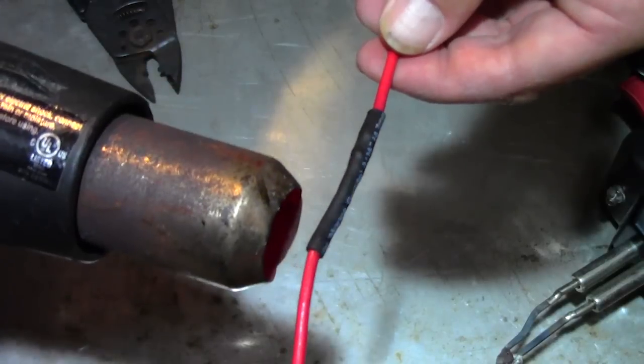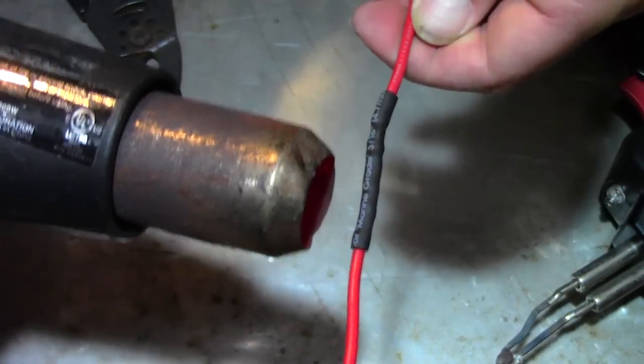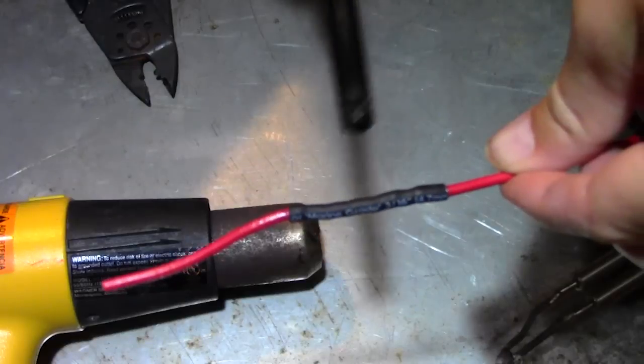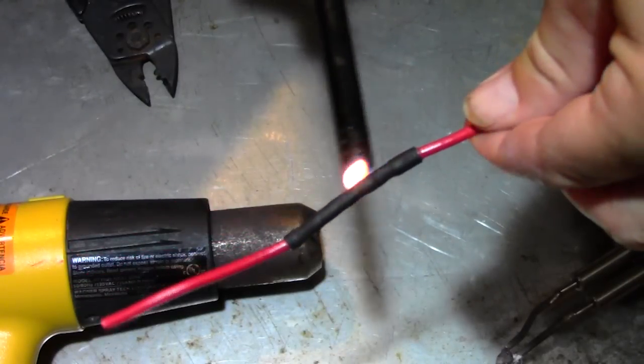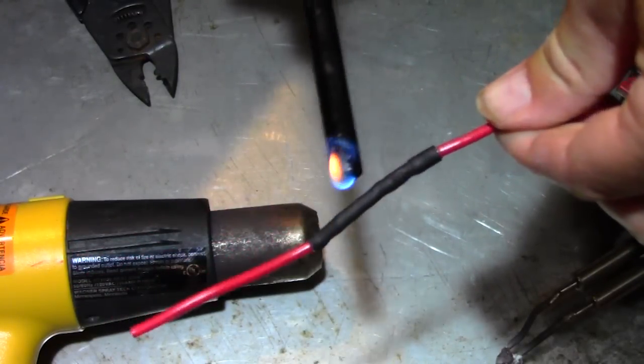Alternatively, you can use a lighter, holding it underneath and spinning your wire and the heat shrink around the flame.